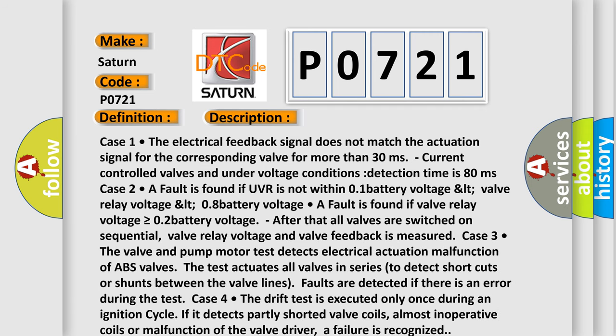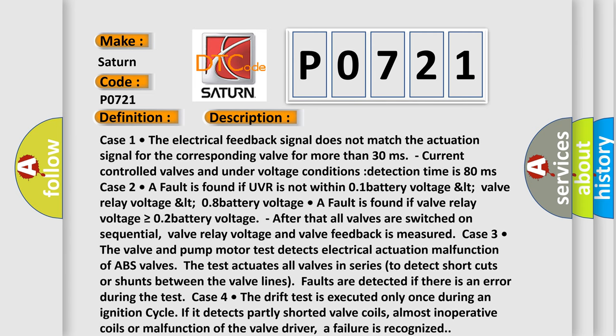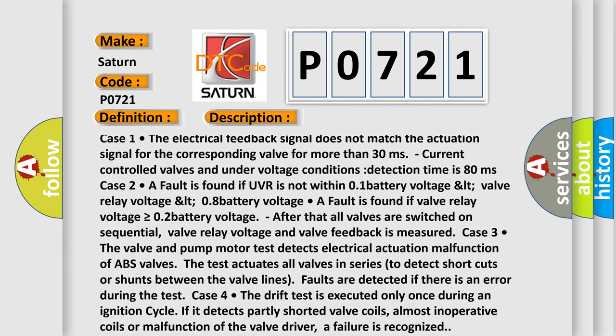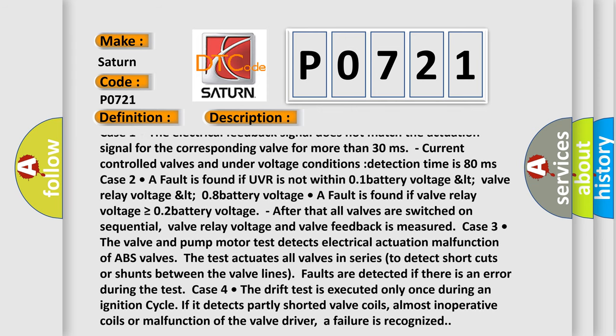Case 1: The electrical feedback signal does not match the actuation signal for the corresponding valve for more than 30 milliseconds. Current controlled valves and under voltage conditions detection time is 80 milliseconds. Case 2: A fault is found if UVR is not within 0.1 battery voltage.